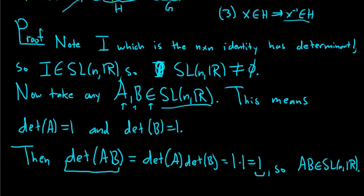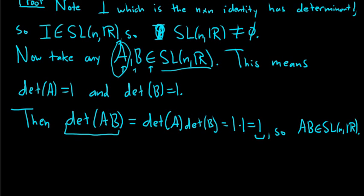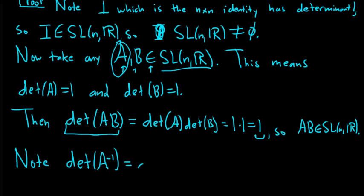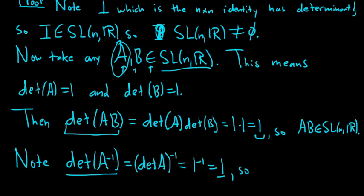Now we take an element A in our set and show the inverse is in the set. Note that det(A⁻¹) = det(A)⁻¹, which is a formula from linear algebra. Since det(A) = 1, this gives 1⁻¹ = 1. So the determinant of A inverse is equal to 1, which means A⁻¹ is in SL_n(R).